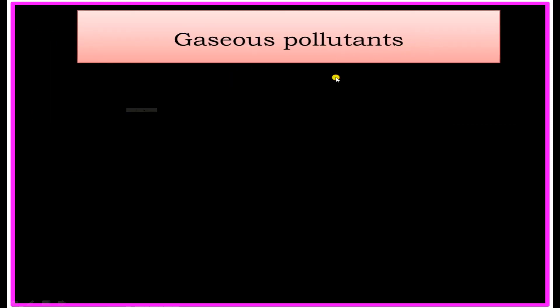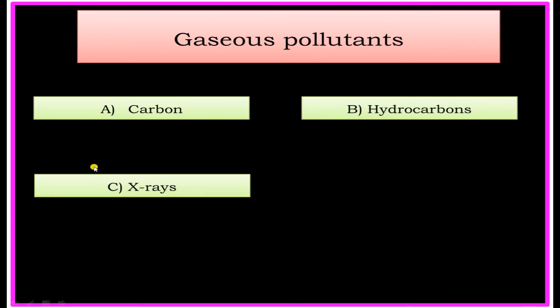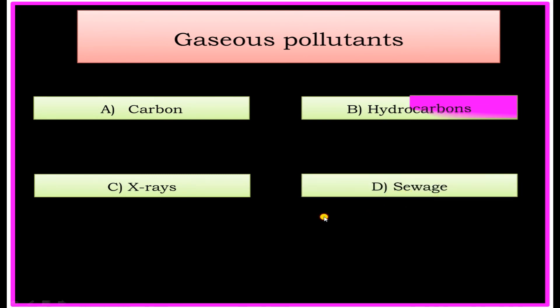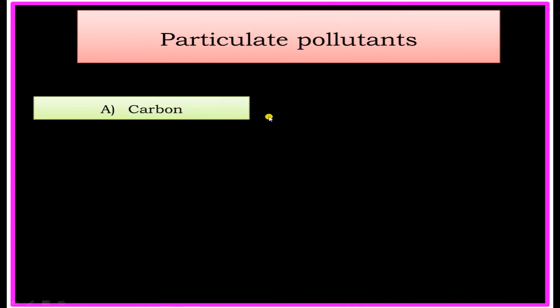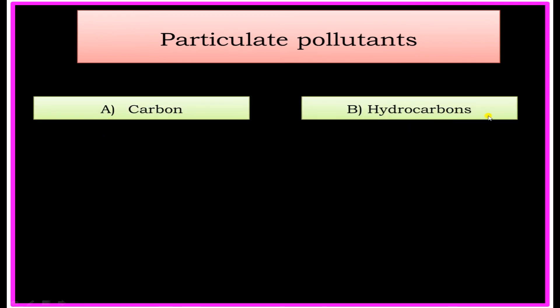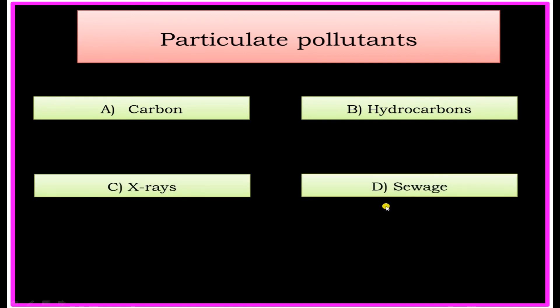Gaseous Pollutant — Options: A) Carbon, B) Hydrocarbon, C) X-Ray, D) Sewage. Answer: Hydrocarbons. Particulate Pollutants — Options: A) Carbon, B) Hydrocarbon, C) X-Ray, D) Sewage. Answer: Carbon.